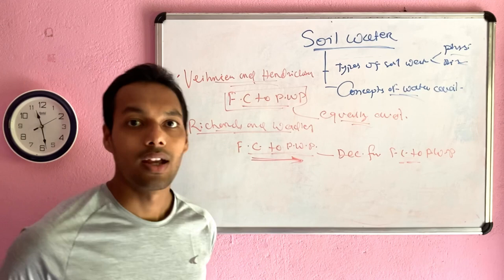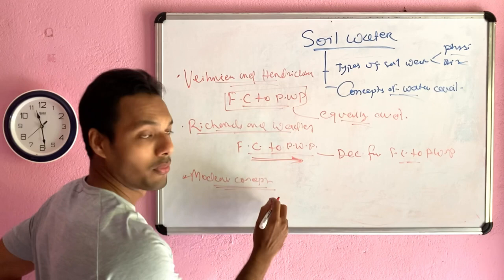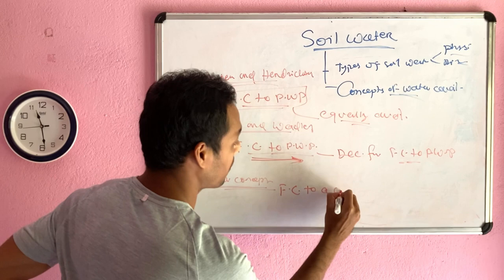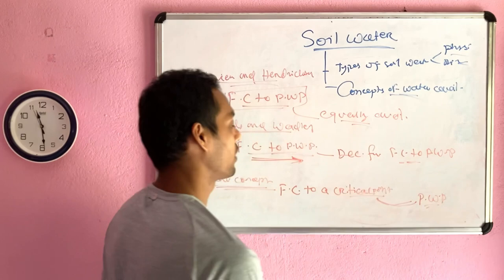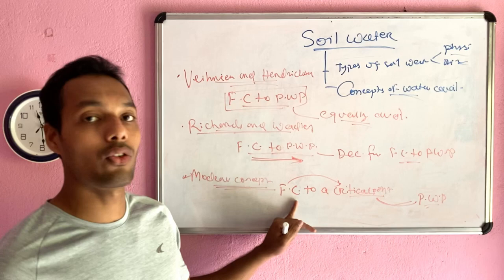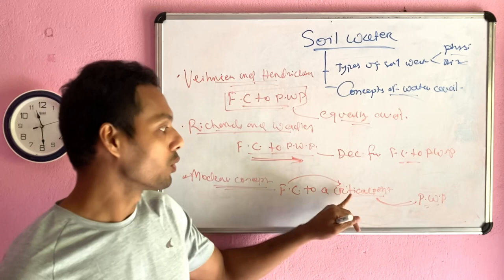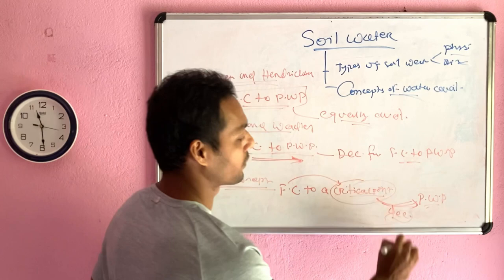The modern concept says that water availability does not differ from field capacity to a critical point, and from that critical point the availability decreases towards permanent wilting point. So in the modern concept, from field capacity to the critical point, water availability is equal and there is no effect on crop. After the critical point, availability decreases towards permanent wilting point. These are the three concepts of water availability.